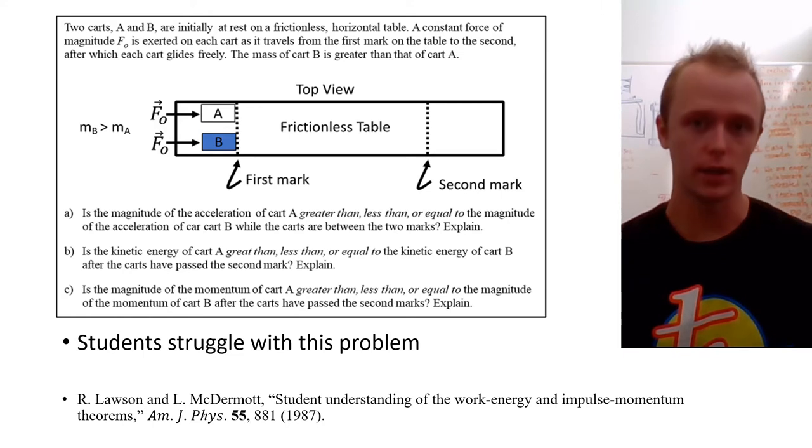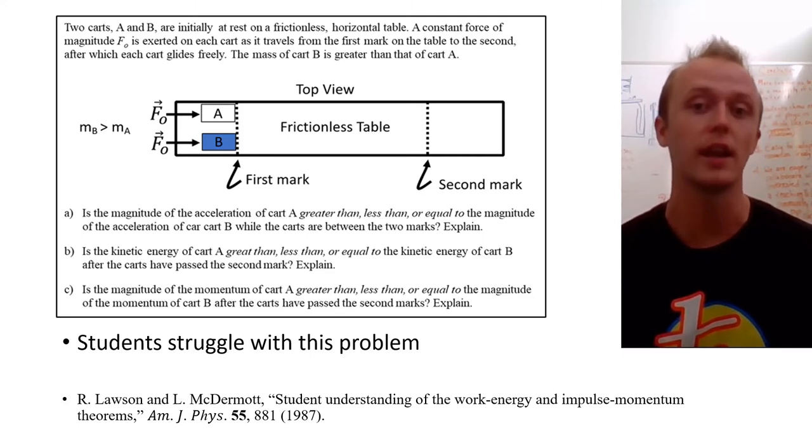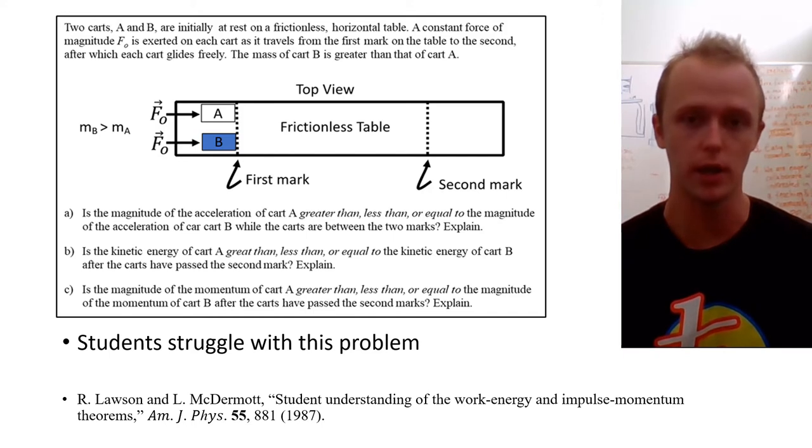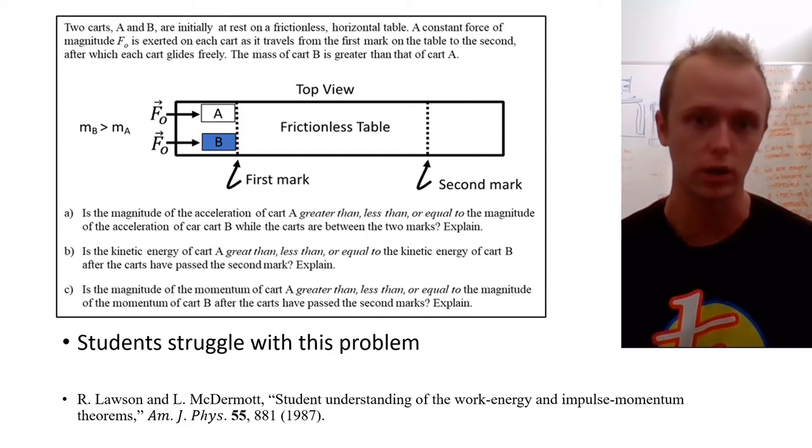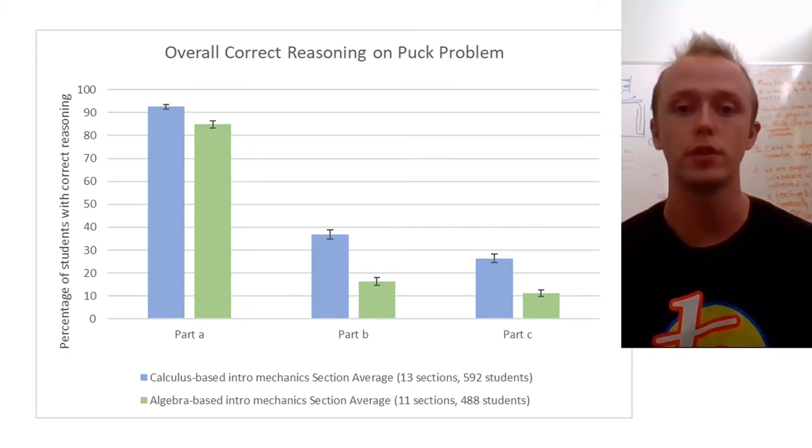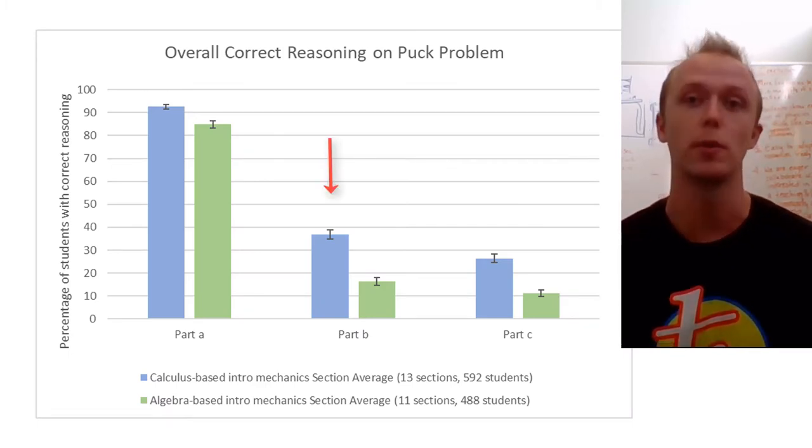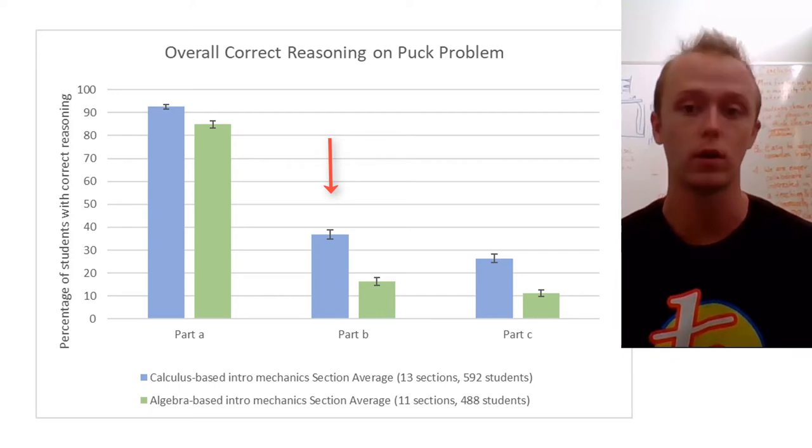In line with previous studies, students struggled significantly with parts B and C. Part B requires a one-step application of the work energy theorem to show that the kinetic energies are equal when they reach the line. Part C requires an application of the impulse momentum theorem to show that the more massive cart, which takes longer, gains more momentum. Only about one-third of students in calculus-based mechanics classes answered part B correctly, and only about a quarter answered part C correctly. Algebra-based classes did less than half as well.